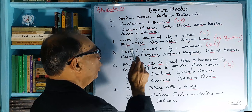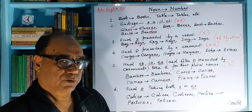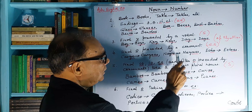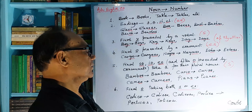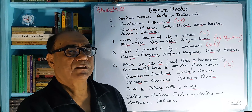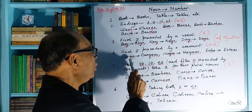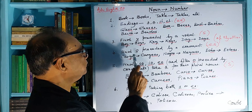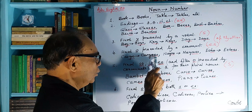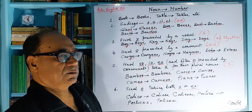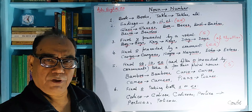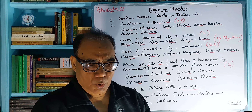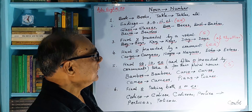Number four: final O. If a word ends in O and that O is preceded by a consonant, then it will take ES. For example, 'cargo' becomes 'cargoes' (ES). 'Negro' becomes 'negroes' (ES). 'Echo' becomes 'echoes' (ES).